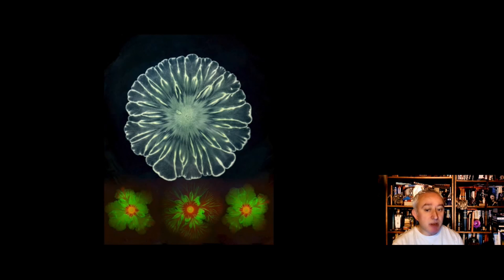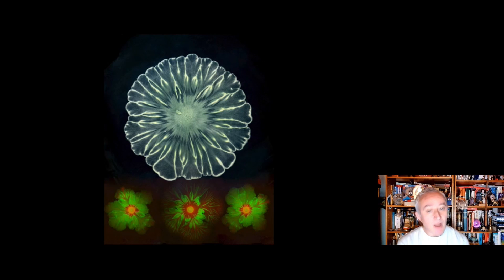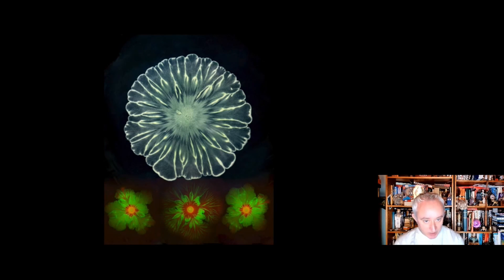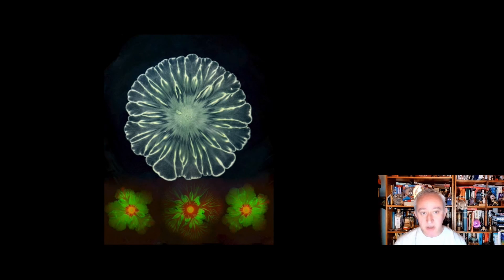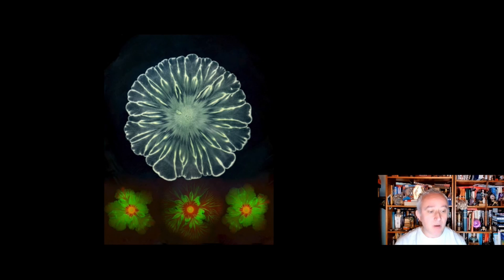Coming towards the end, here is another image called bacterial flowers, from an artist called Lev Tsimring, a research scientist at the BioCircuits Institute. When two different strains of bacteria grow together they can be appropriately colorized, and we can get some very varied and quite miraculous, almost flower-like formations. This is available as a large display and is on show in the San Diego Natural History Museum.